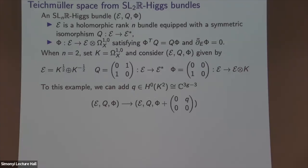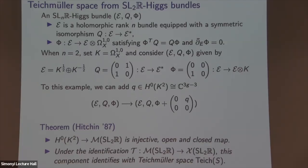Recall Goldman's theorem: the character variety for PSL₂ℝ has components identified with Teichmüller space, a vector space of complex dimension 3g-3. In Hitchin's original paper introducing Higgs bundles, he proves that the map from holomorphic quadratic differentials into the moduli space of SL(2,ℝ) Higgs bundles is injective, open, and closed. Under the correspondence between Higgs bundles and representations, this component identifies with a lift to SL(2,ℝ) of Teichmüller space — the Higgs bundle description of holonomies of hyperbolic structures.